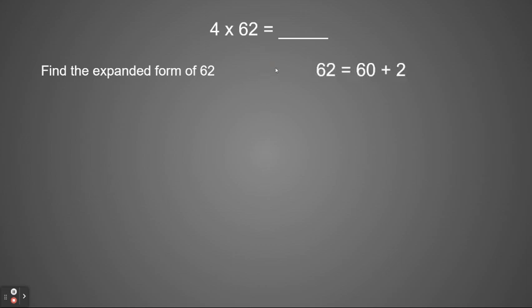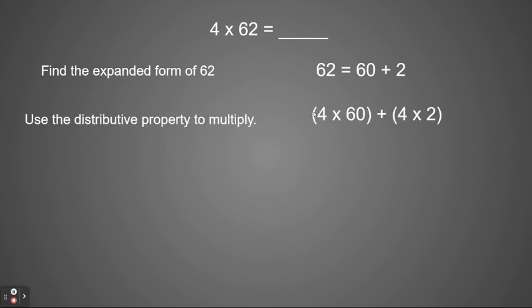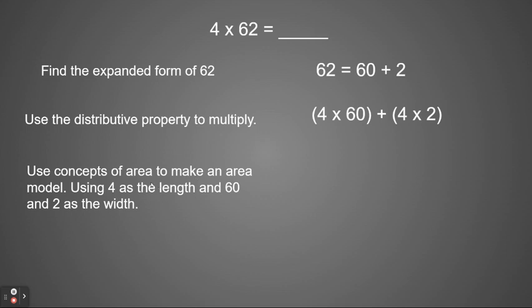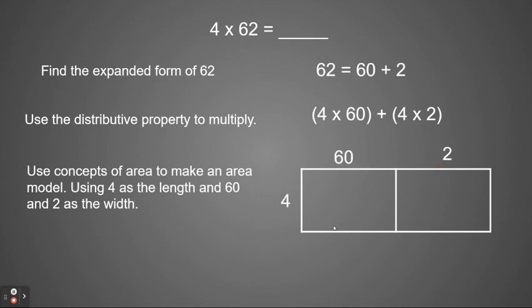We'll do one more example. This time we have 4 times 62. We're going to again start with the expanded form of 62. So 62 is equal to 60 plus 2. Then we'll use the distributive property to multiply. So we'll have 4 times 60 plus 4 times 2. Finally, we're going to use our area model to multiply through using 4 as the length and 60 and 2 as the width.